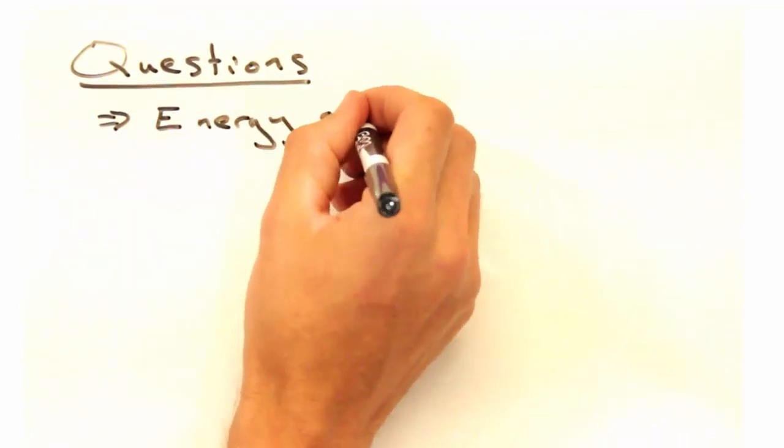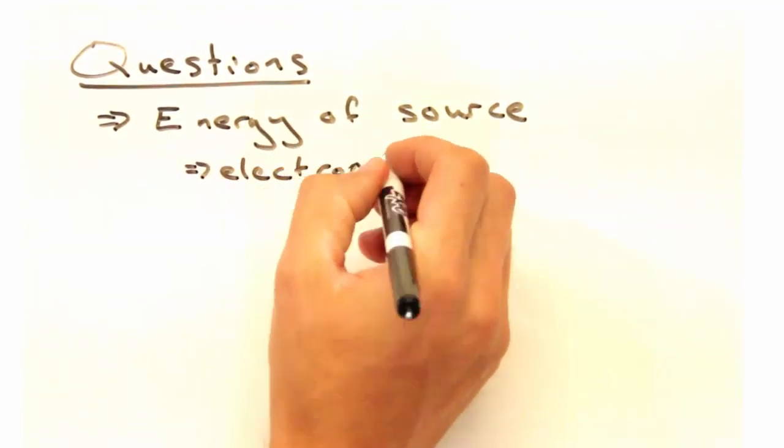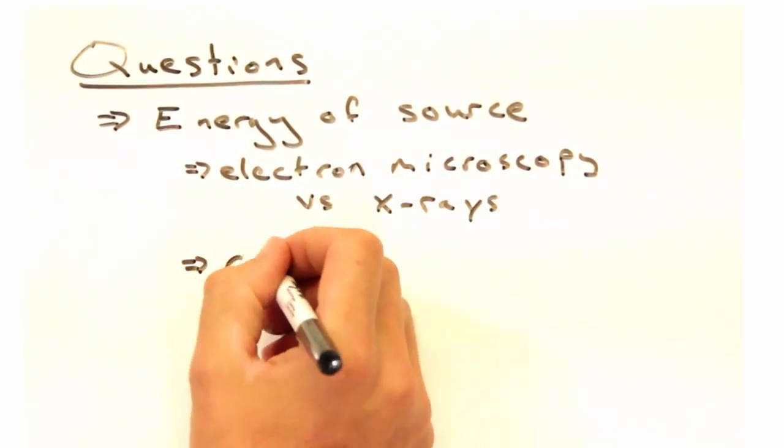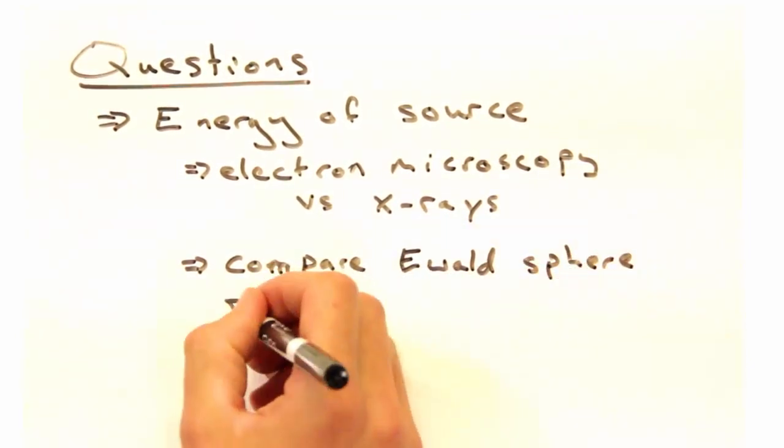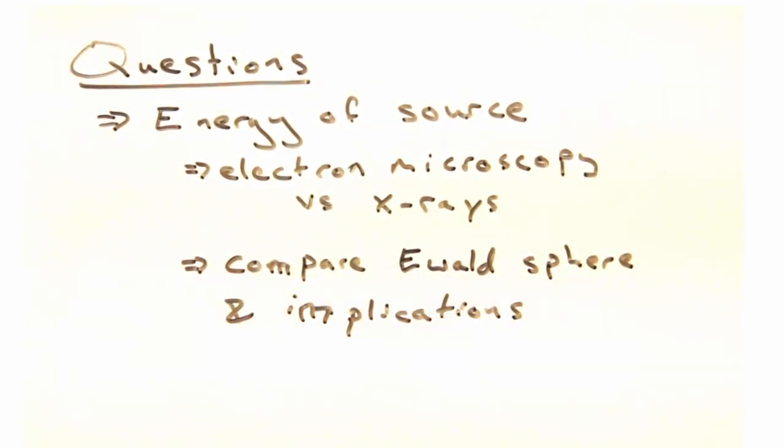And second, in electron microscopy, the energy of the source is typically much higher than for x-ray diffraction. How would an Ewald Sphere created from electrons compare to one from x-rays?